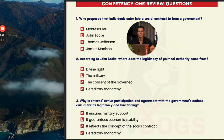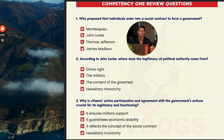Let's get rolling with three practice questions from competency one. Number one says: who proposed that individuals enter into a social contract to form a government? You have options here: Montesquieu, Locke, Thomas Jefferson, and James Madison. When we're talking about the social contract, we're really talking about the Enlightenment. Only two of these options represent Enlightenment thinkers that influenced American government, which are A and B — John Locke and Montesquieu.